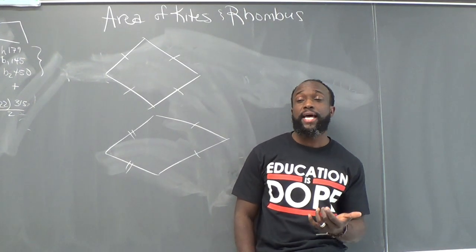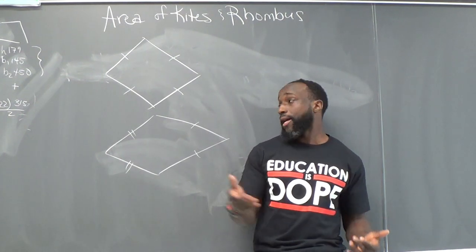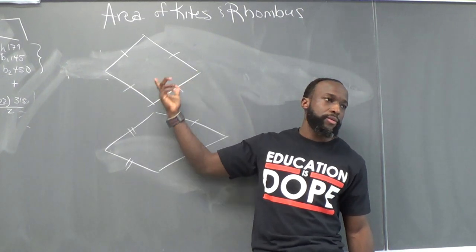But there's something else that a square needs in order for it to be a square. What's that? A right angle. Right, there's no right angles here. There's some acute and some obtuse.